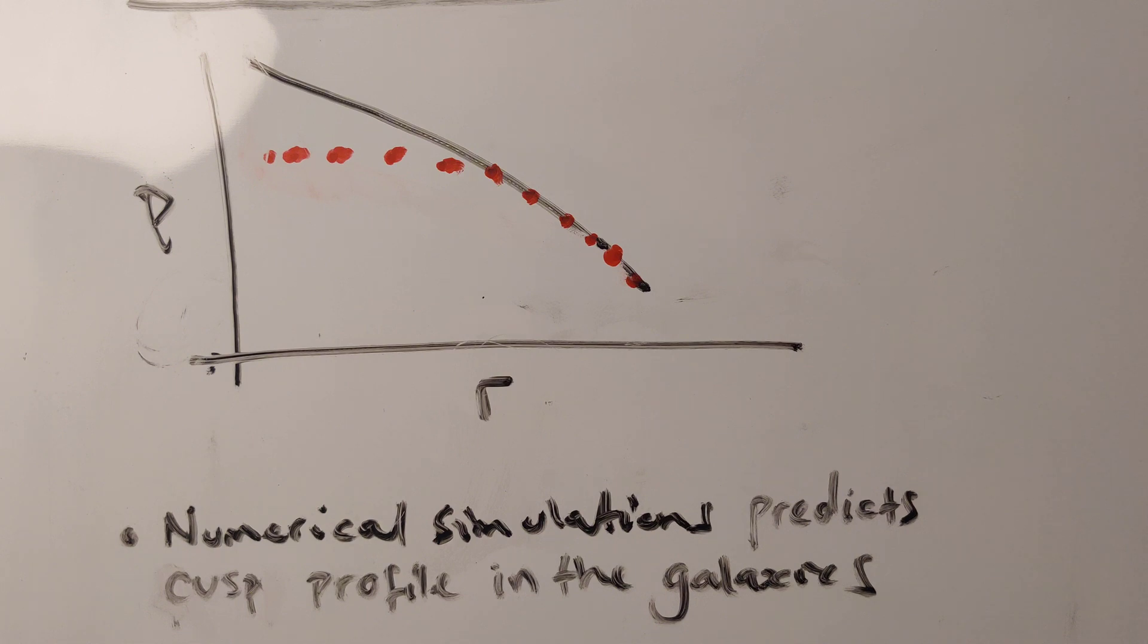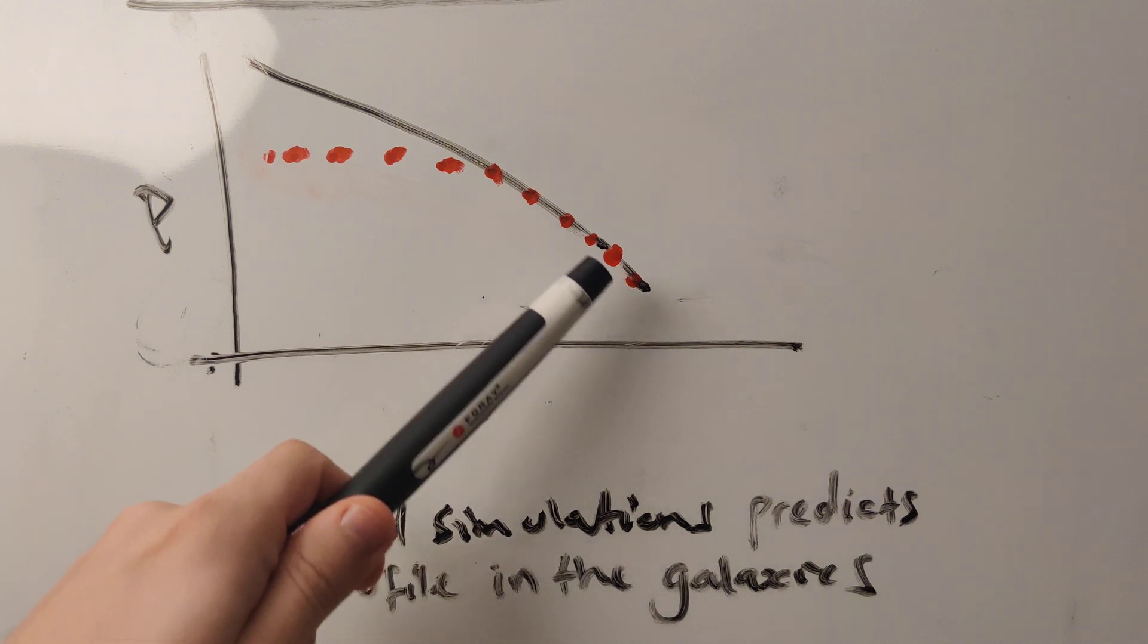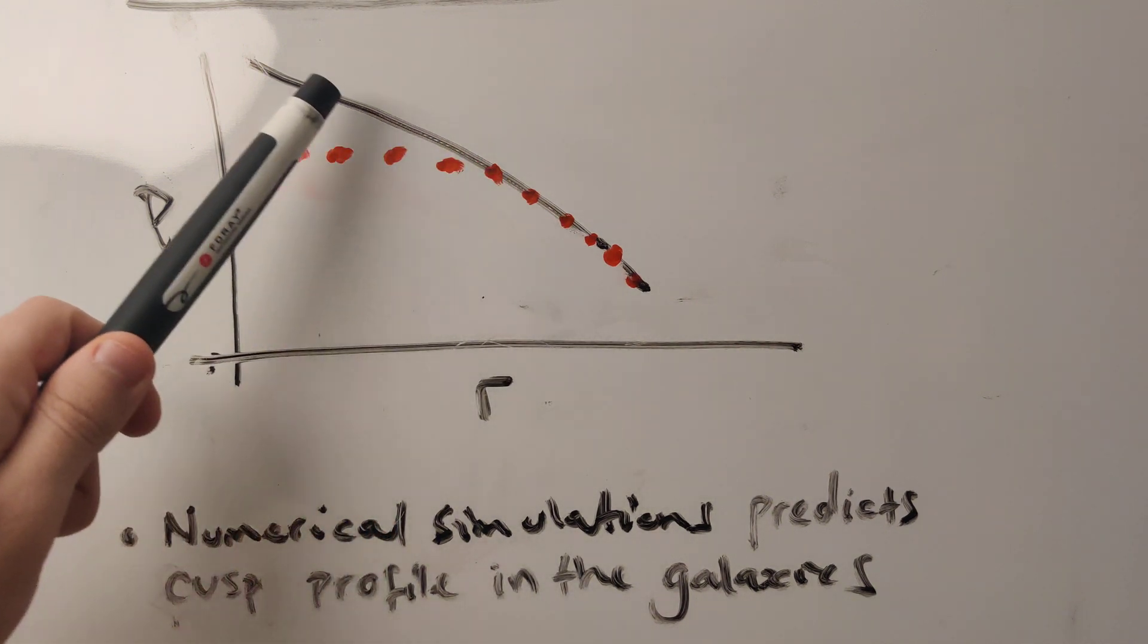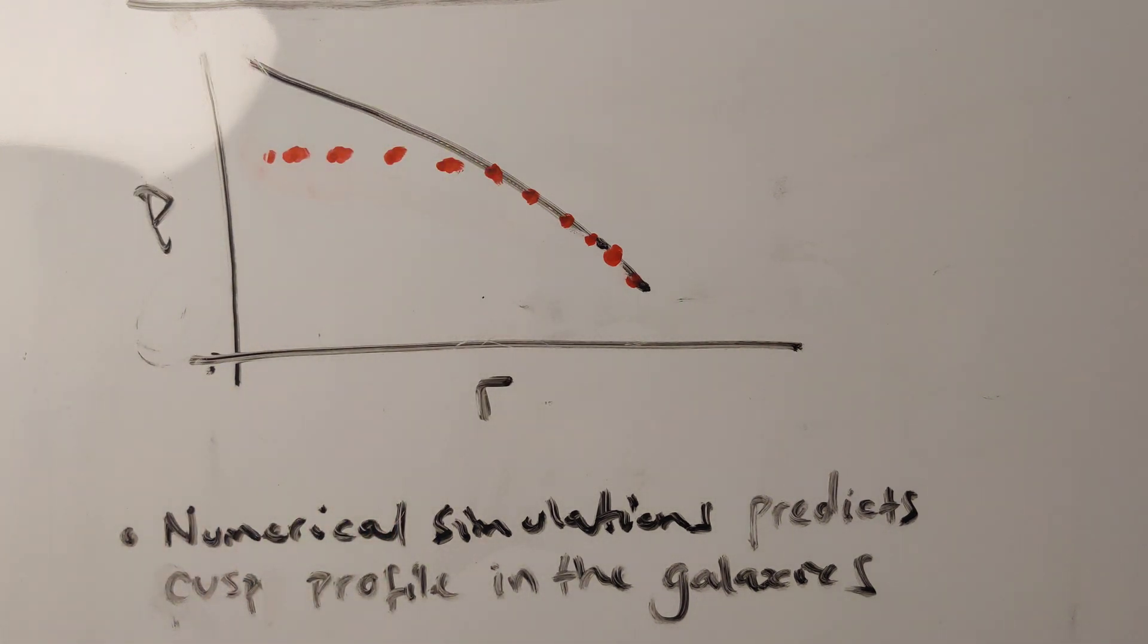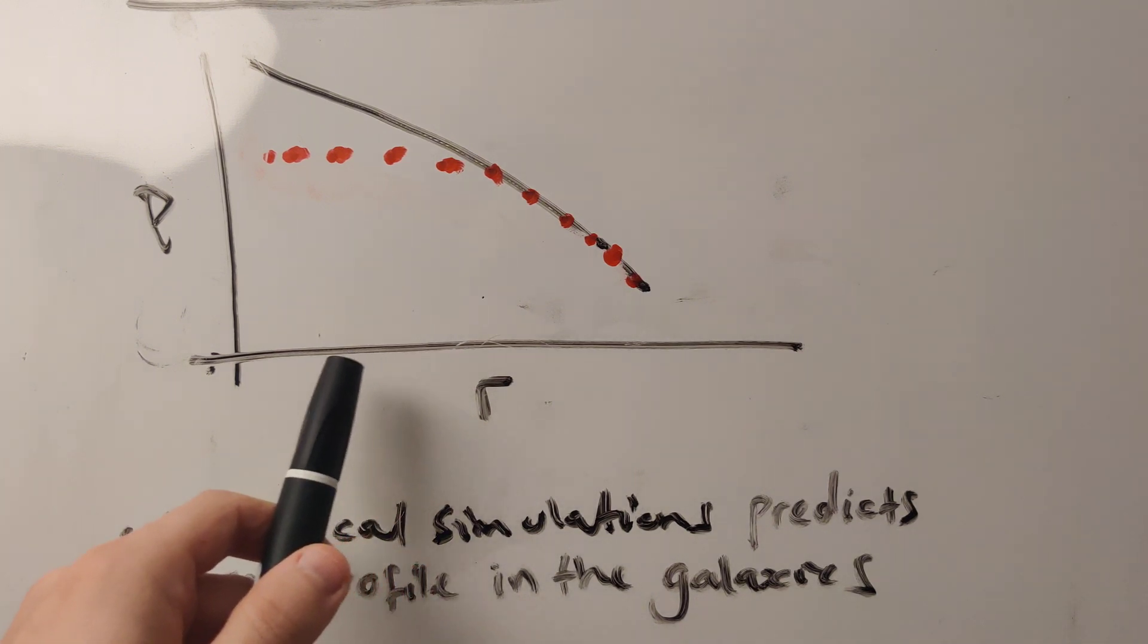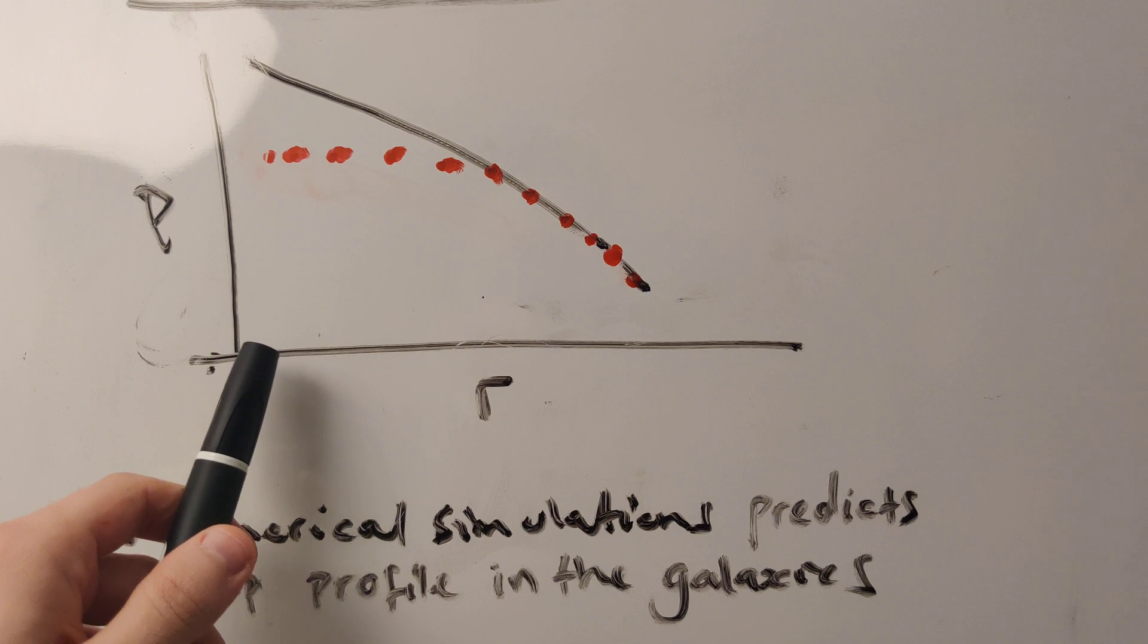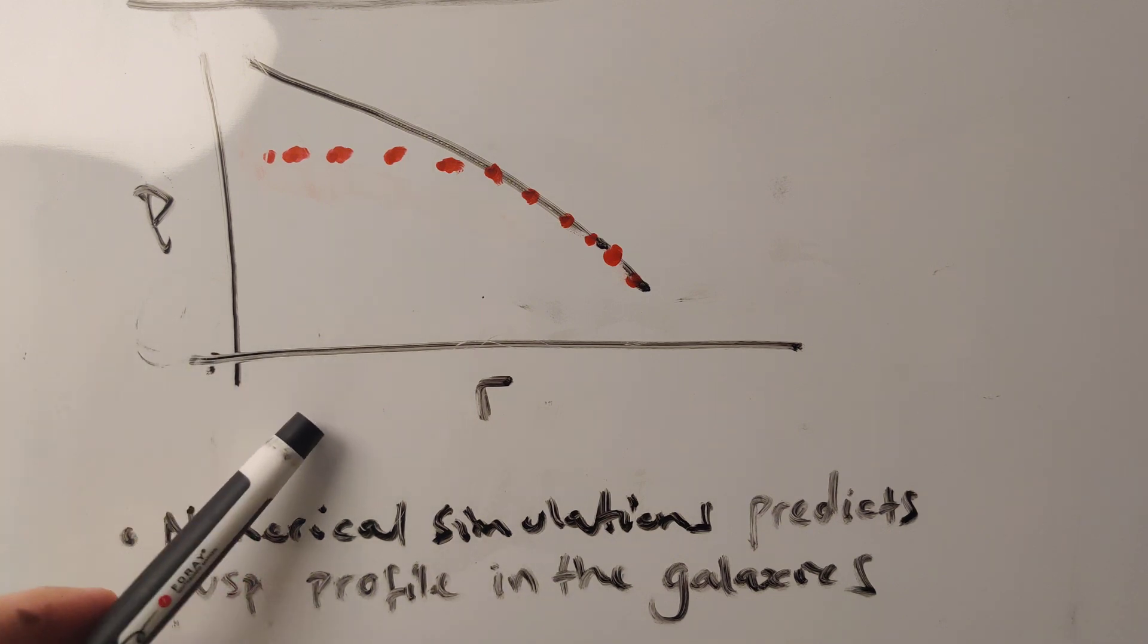Now, numerical simulations of a universe with cold dark matter tells us that the dark matter density in a galaxy should follow this black line. What does this mean? This means that as you get closer to the centre of the galaxy, the dark matter density should increase sharply.